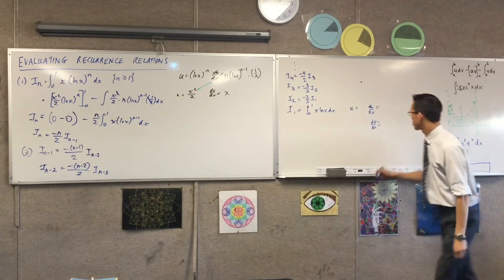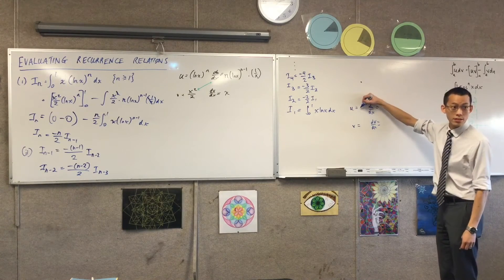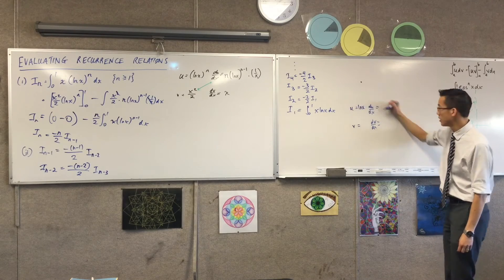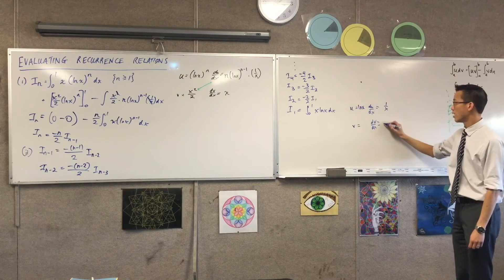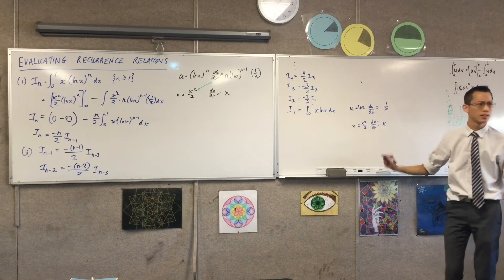What am I going to choose? U equals x. I think log x might be a little more helpful. Over here, that's going to give me 1 over x. Over here, that leaves me with x, which leaves me with x squared on 2. This looks familiar. Doesn't it?